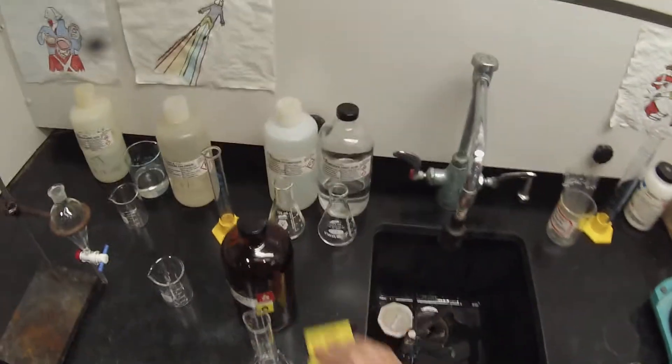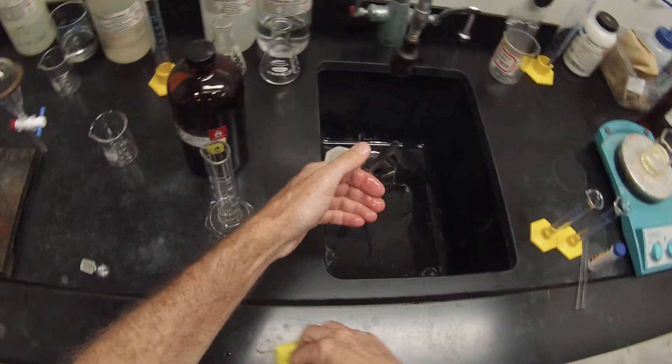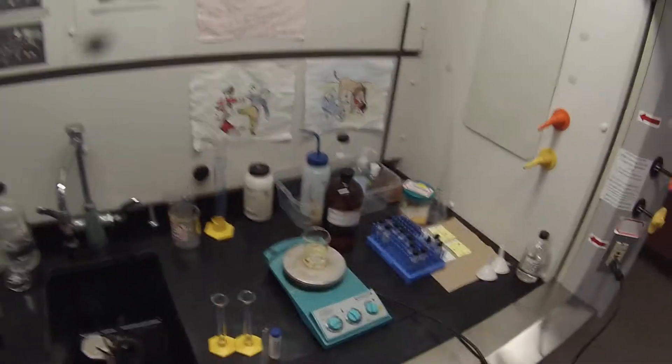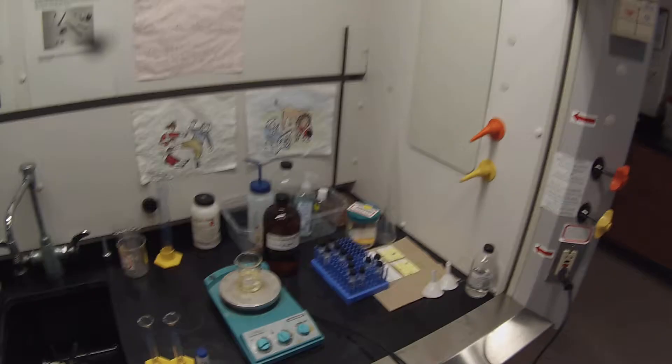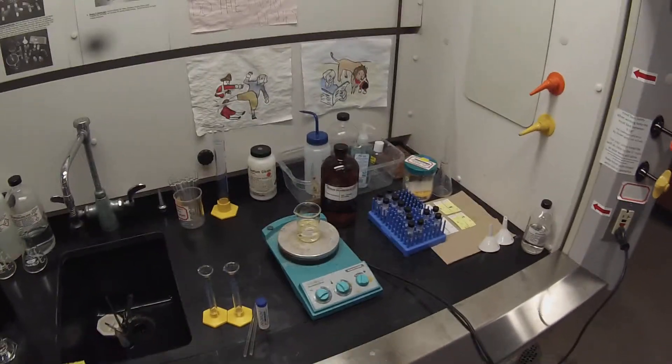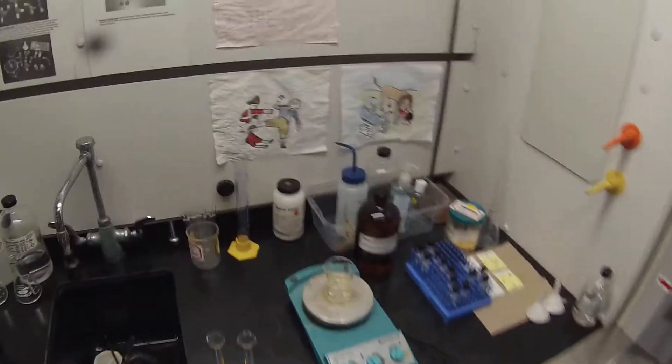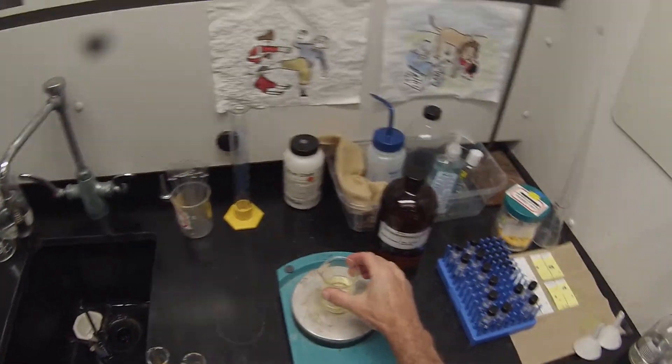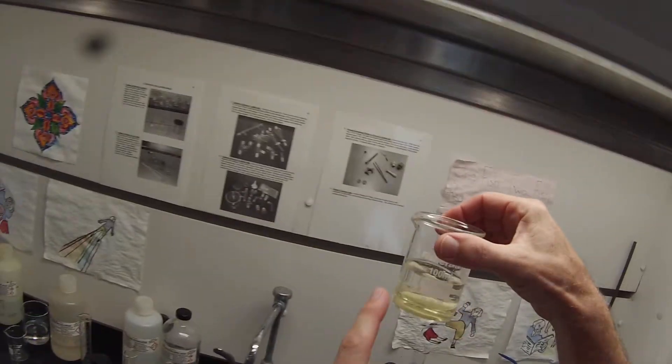I used the diethyl ether because I knew that both vanillin and cinnamic acid were soluble in it. I don't know for sure that they're soluble in methyl tert-butyl ether, but I suspect they are since things that are soluble in one ether solvent are often soluble in another. It looks like that's dissolved pretty nicely.